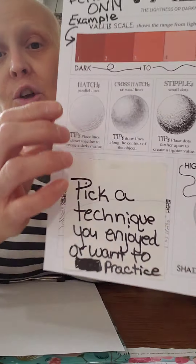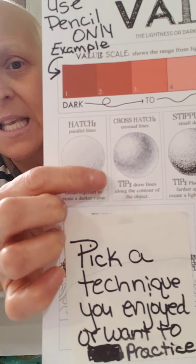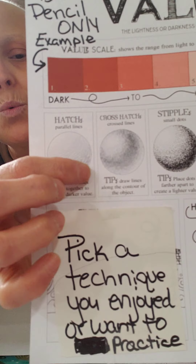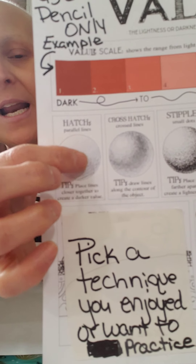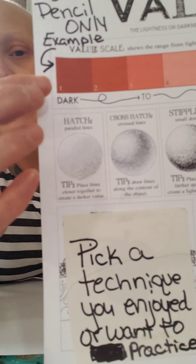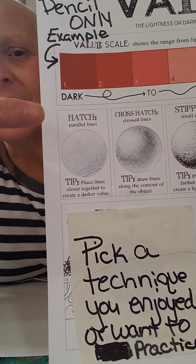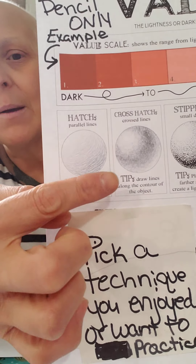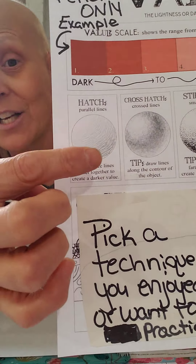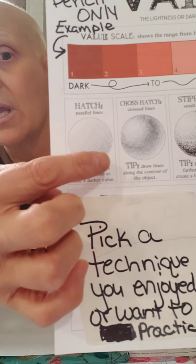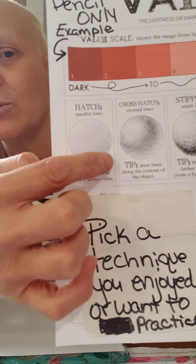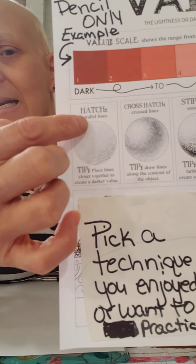You'll make all kinds of hatch marks. You'll start at your bottom right-hand corner — this area will be darker, and as it moves up, your light source is coming from the left-hand side. So your lightest point will be at the top. You'll make little hatch marks just like I showed you, and you'll move up until that's your lightest point. So you'll go darkest to lightest moving up.